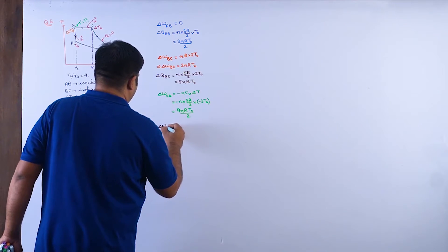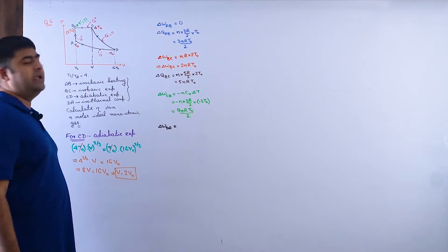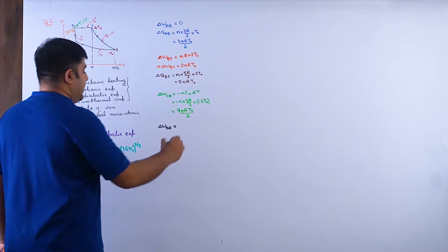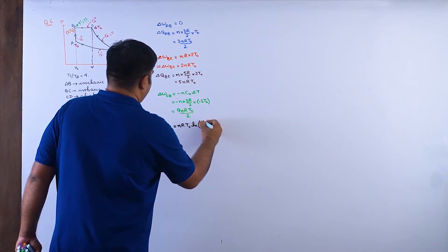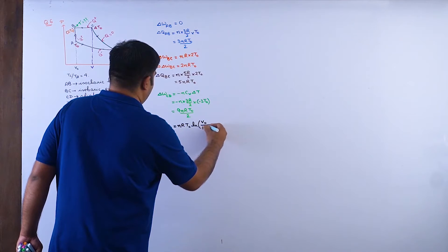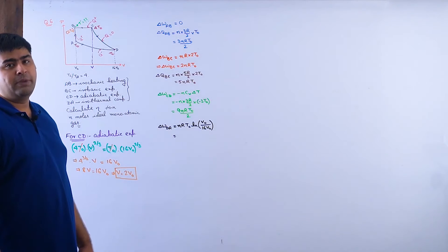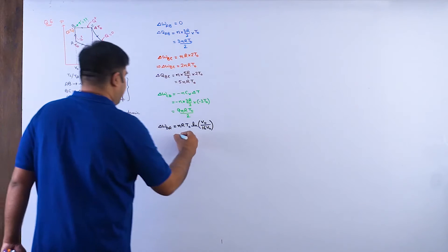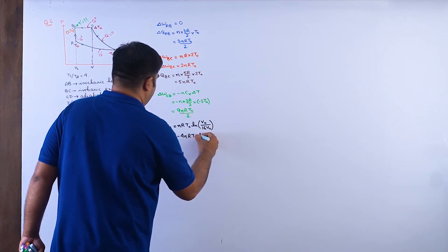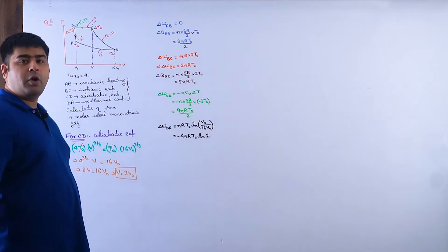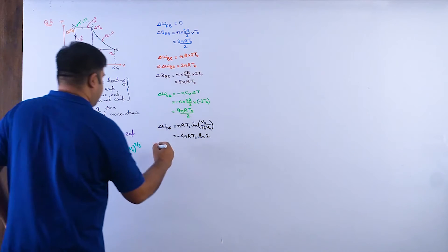Delta W_DA for the isothermal compression: W = nRT_not · ln(V_not / 16V_not) = nRT_not · ln(1/16). Since 16 = 2^4, this gives W_DA = −4nRT_not · ln2.